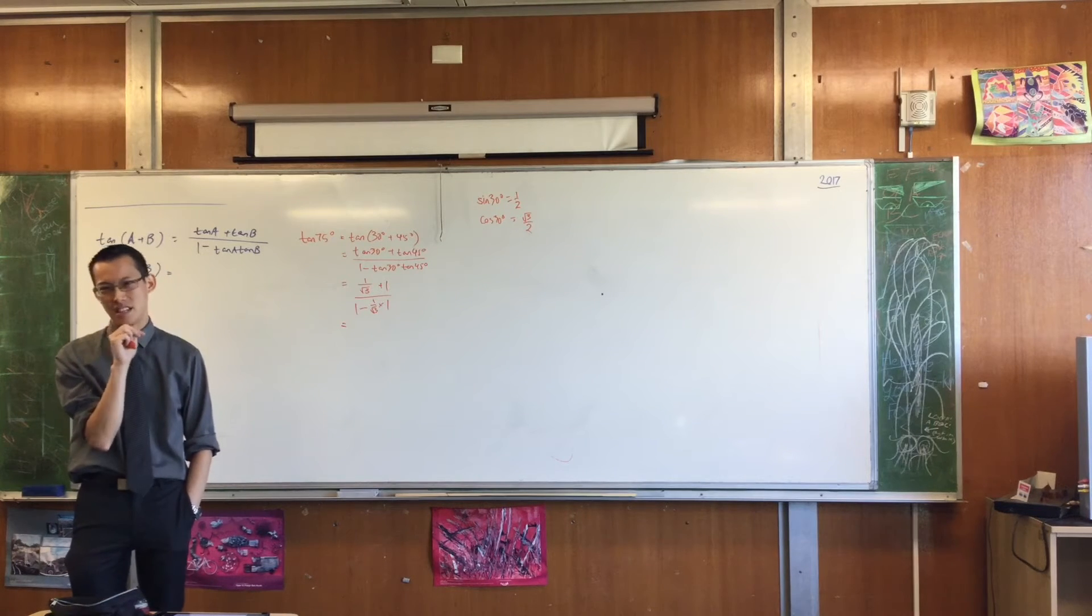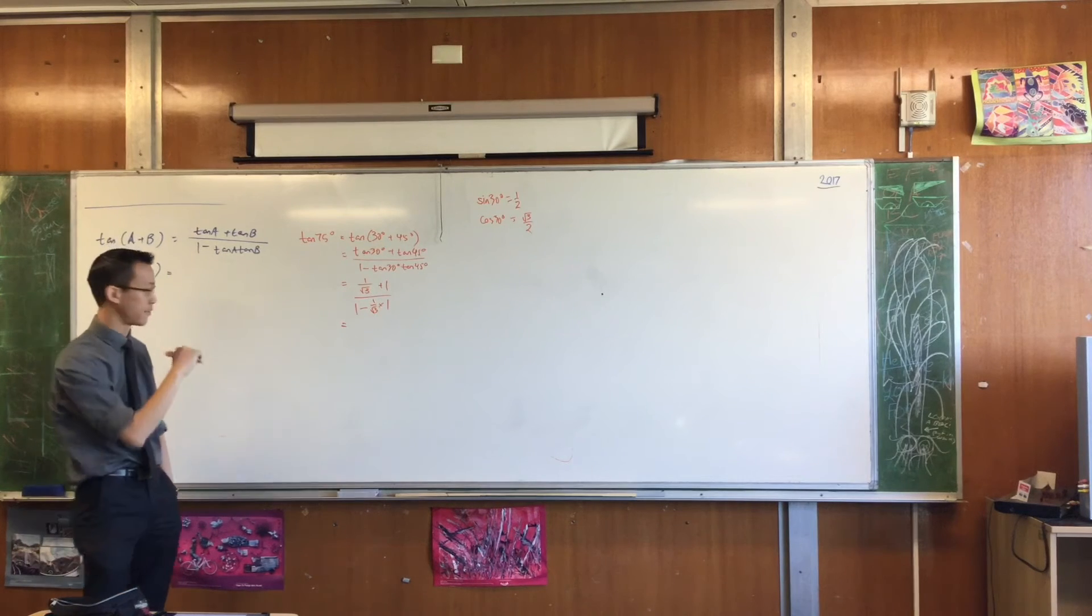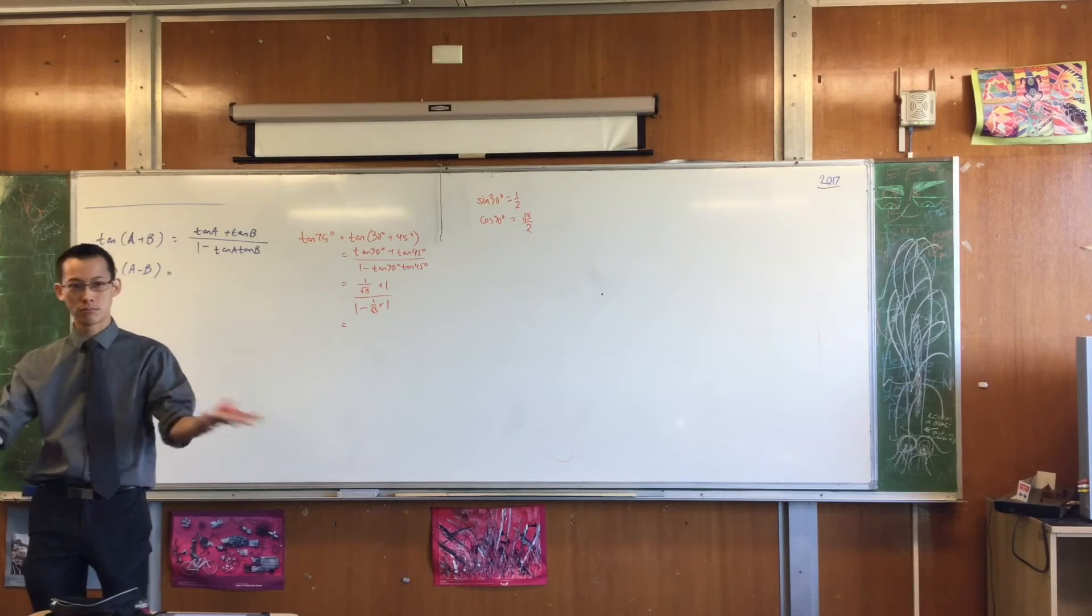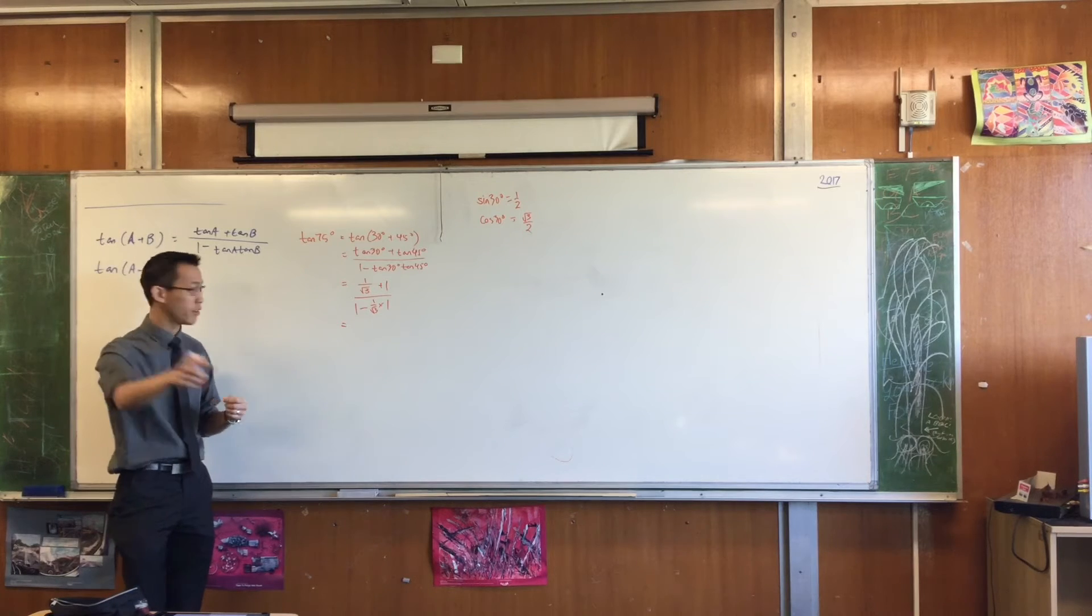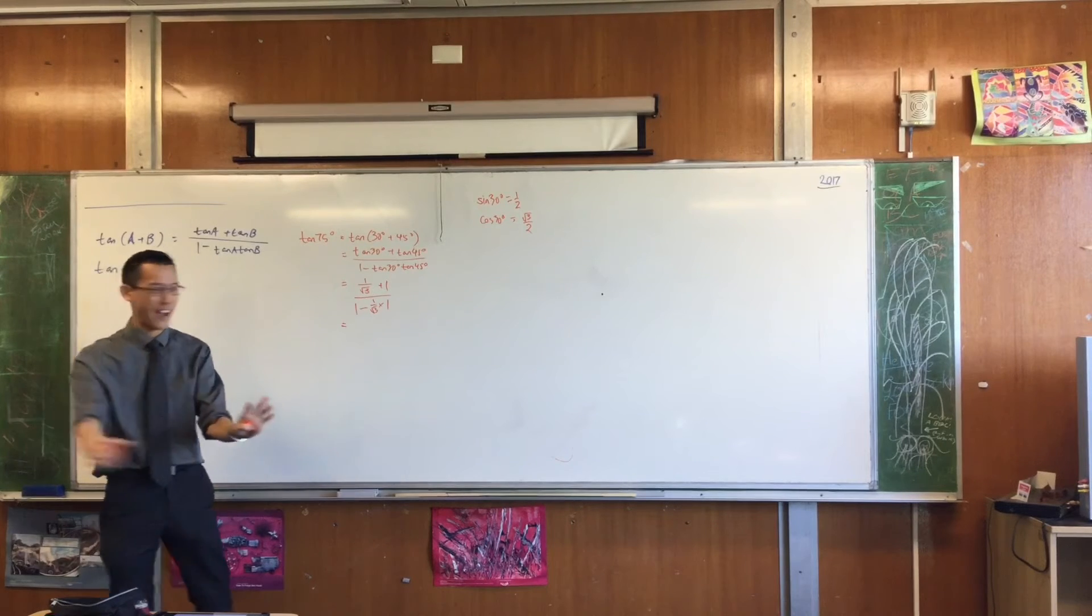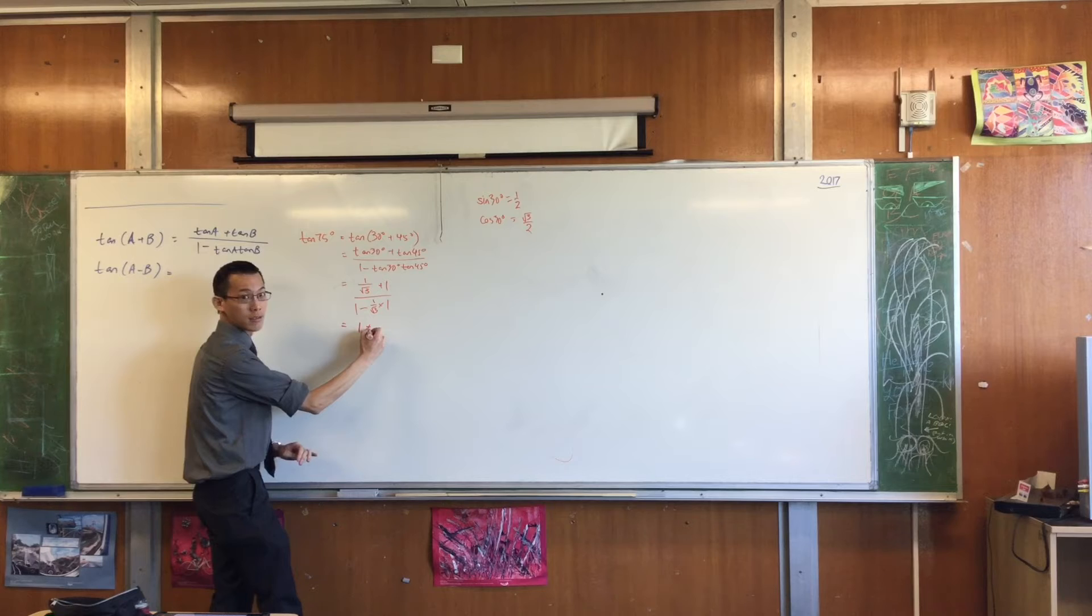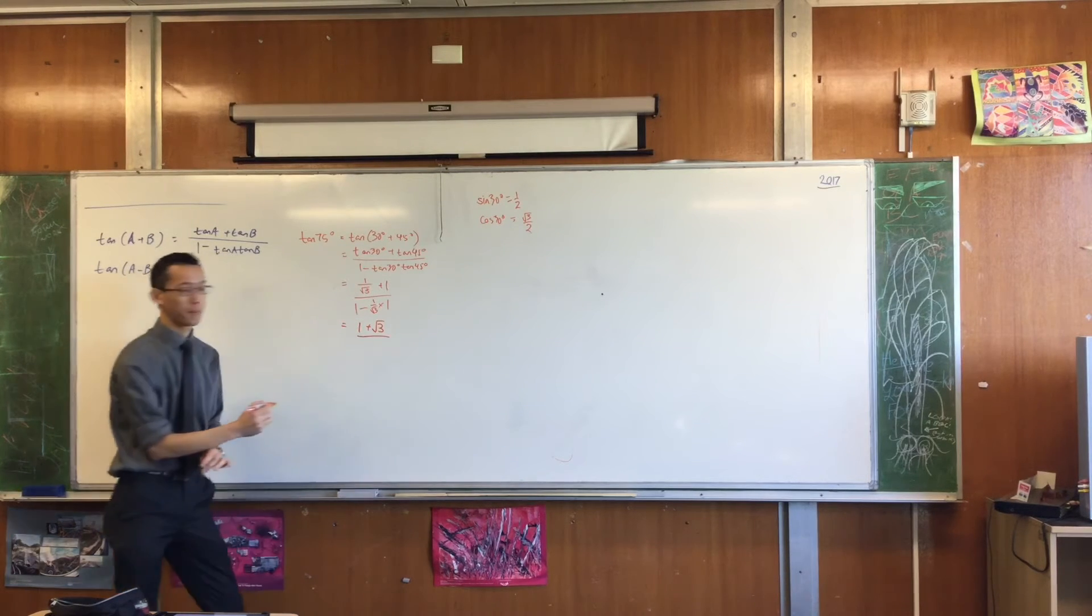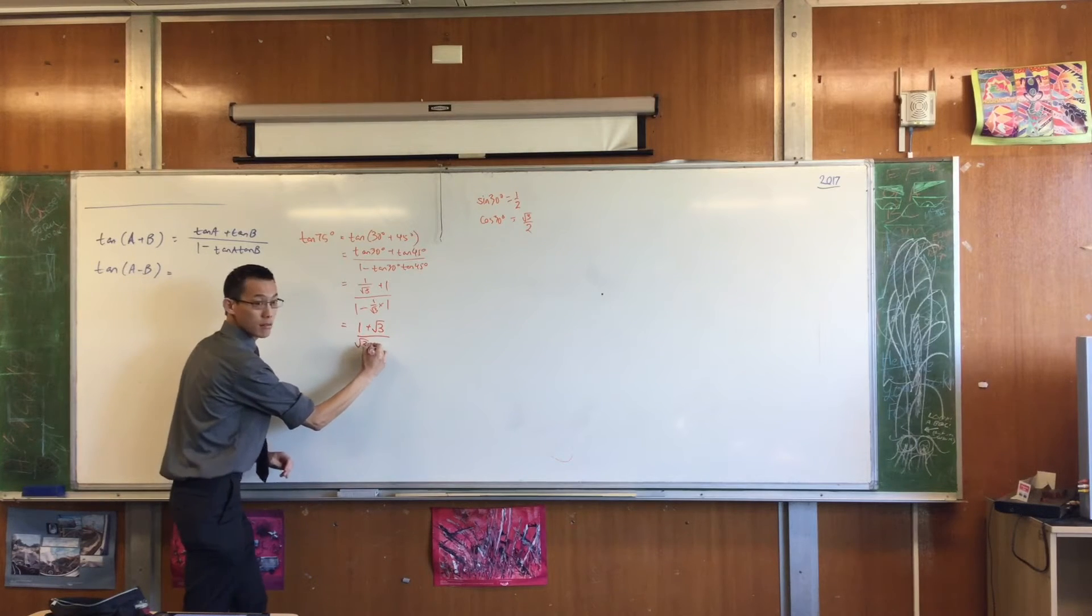The main thing I dislike about this is there's fractions on fractions. Probably the most efficient way to get rid of all the fractions on fractions is to choose something to multiply through by on top and bottom that gets rid of all of them. What should I choose? Root 3 will do it. Root 3 will do it. I will come to rationalizing in a second, but let's do it one step at a time. We'll get rid of fractions on fractions first. That turns that into 1 plus root 3 on the top. What am I getting on the bottom? Root 3 minus 1.